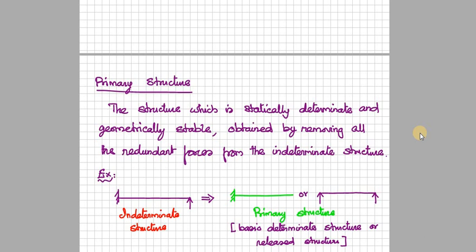Either you could remove the moment at support, the left support, then also you will get the geometrically stable determinate structure called as primary structure.